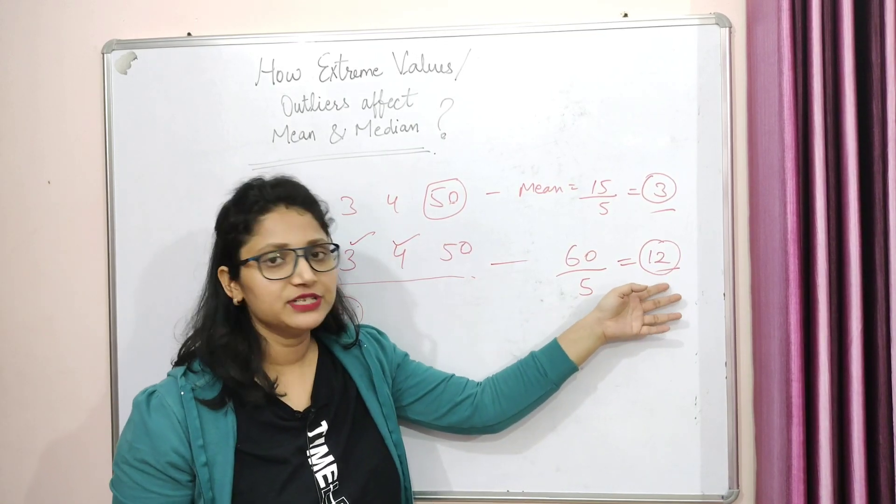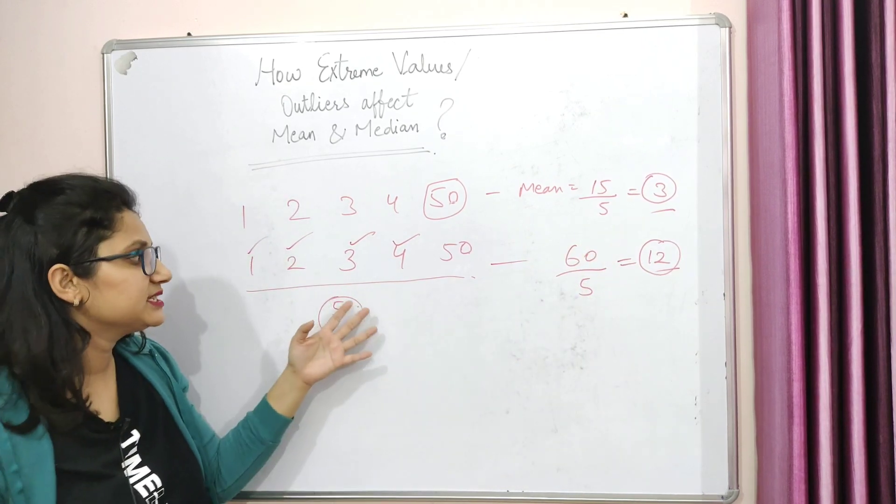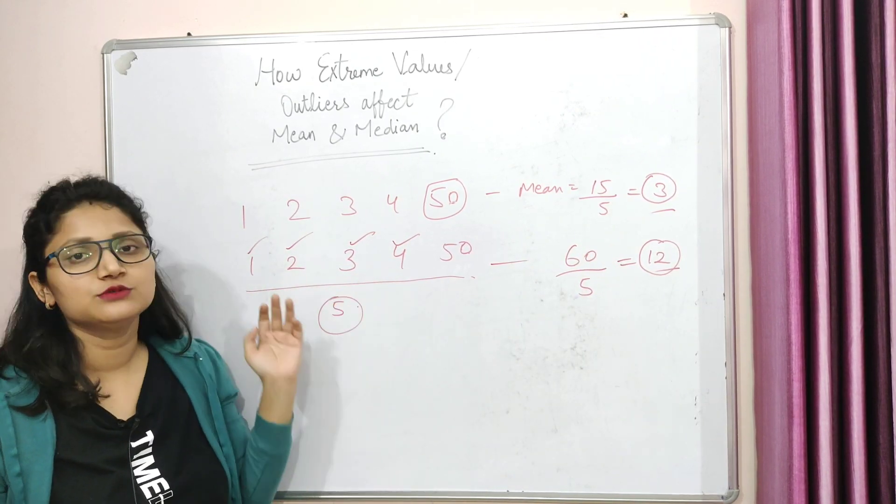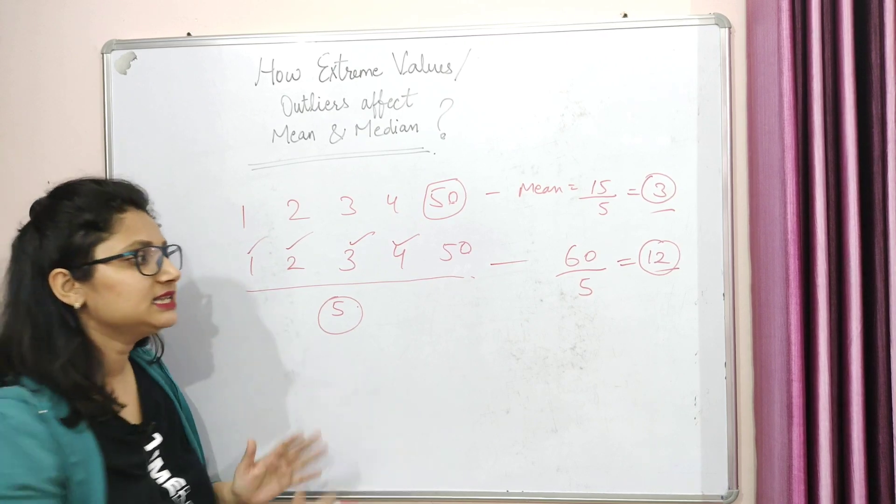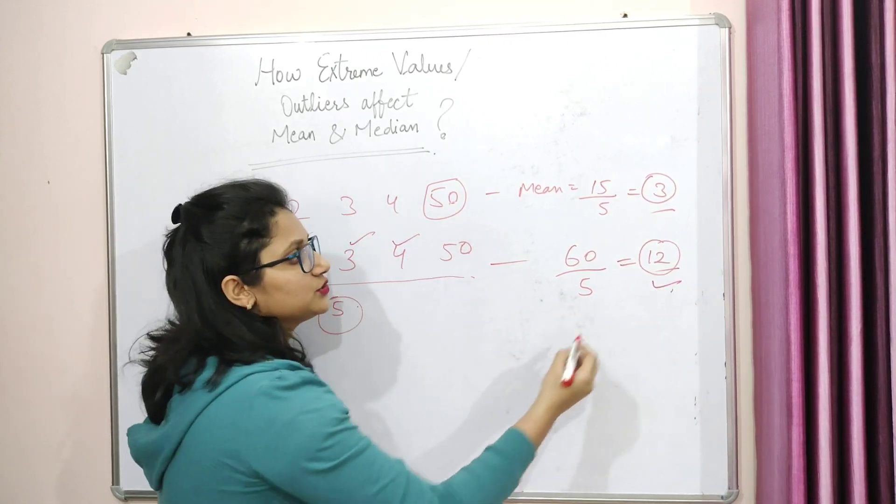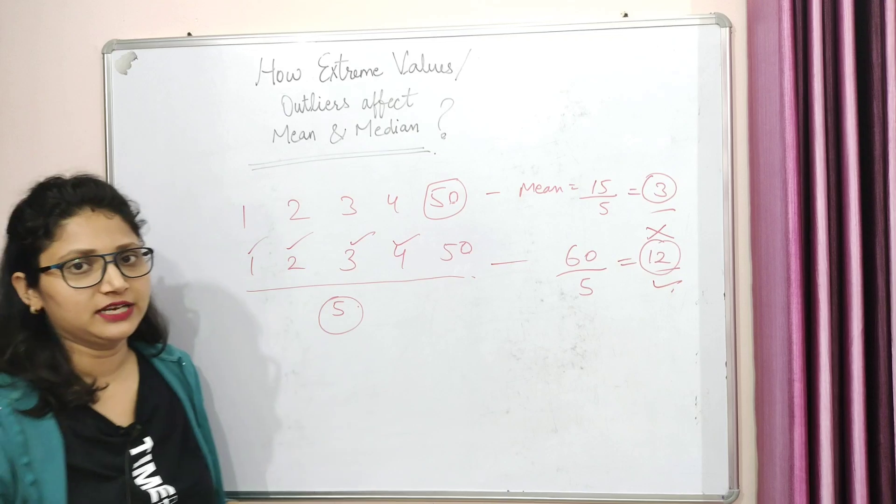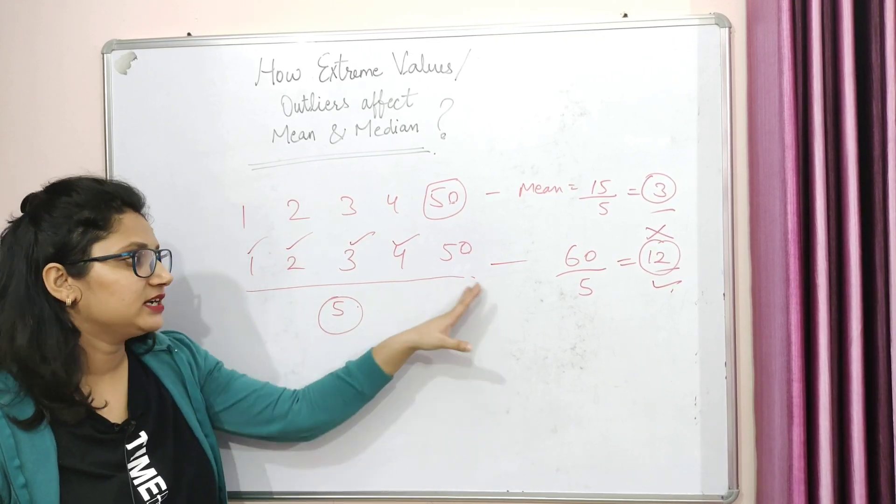It actually, so the mean, the average value, does not represent the data set or the data values at all. Okay, so what are we going to say here? This mean is a bad average. So this is a wrong central value. This central value is not able to represent your data properly.